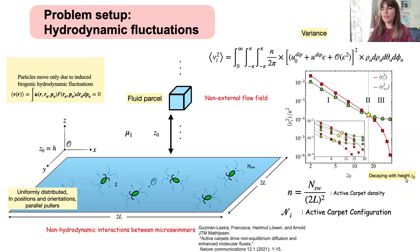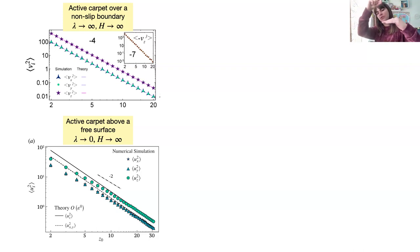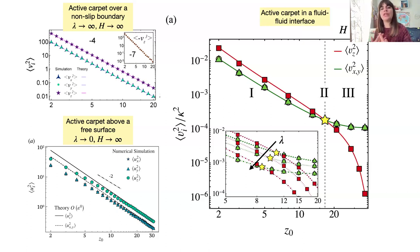They are also non-monotonic, which is something new. In previous works with active carpets, we observed that the hydrodynamic fluctuations decay with zeta-0 — getting farther from the active carpet, the fluctuations decay at different rates depending on whether we are close to a non-slip surface or a free surface. What is new is that confinement shapes the hydrodynamic fluctuations in a different way, making them non-monotonic.